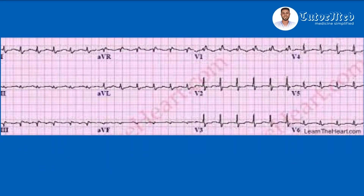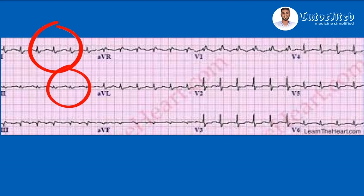Let's look at an ECG with typical low voltage from learntheheart.com. This strip doesn't have a calibration marker, but keep in mind you always need to examine for standardization. We begin by examining the standard limb leads I, II, and III. In lead I, the amplitude of the QRS complexes is less than five millimeters — it doesn't cover an entire big box. The same is true for lead II, which is even more prominent, and for lead III. Using the standard limb lead criteria, this is a low voltage ECG.